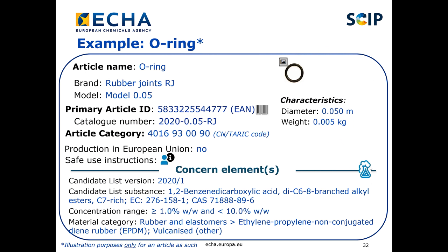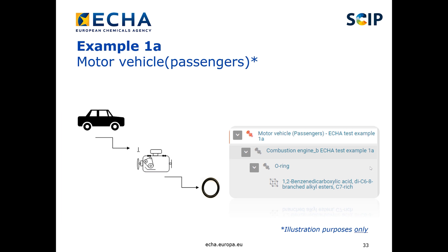There is a pre-setting step to pre-populate your list of candidate list substances in your IUCLID instance by importing the pre-made candidate list reference substance package that ECHA makes available on the SCIP tool webpage. You can find more information on how to do it in the support material named 'How to prepare and submit a SCIP notification dossier' and on the specific candidate list package webpage. In the following slides, I will show the scenarios used during the demo. We will create a SCIP notification dossier of an article as such — this O-ring — and then also a dossier of a complex object, for example a car. So let's start with the demo.